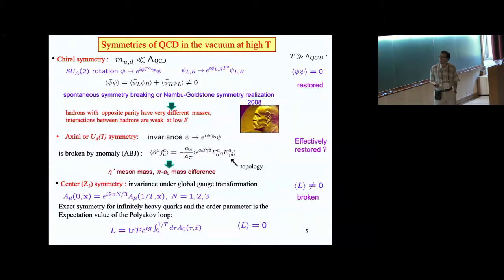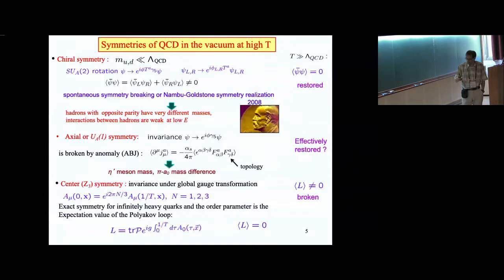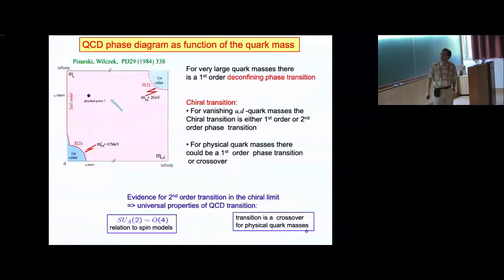This Z(3) symmetry turns out to be the correct symmetry of QCD at low temperature, but at high temperature it gets broken. The Polyakov loop value — the trace of the Polyakov Wilson line — is non-zero at high temperature. I'll discuss that in more detail later; here I just want to establish what kinds of symmetries we have.